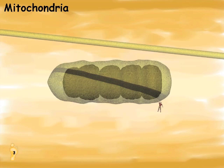The batteries are charged in the mitochondria. Some cells, like muscle cells, have thousands of chargers.